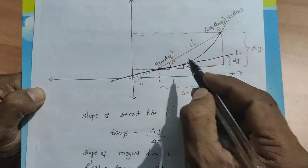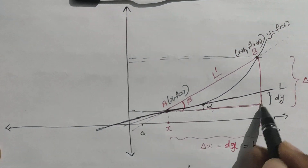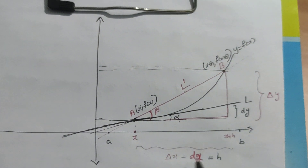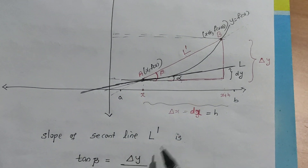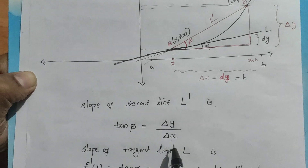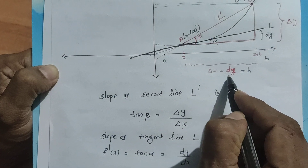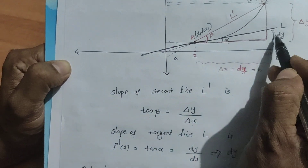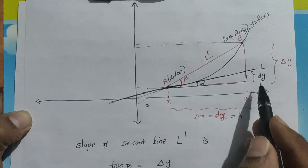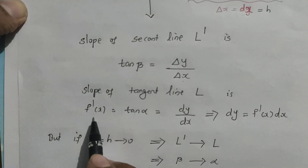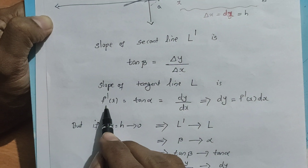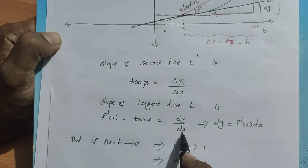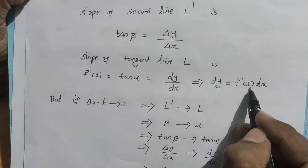The slope of the secant line L dash is given by delta Y over delta X, where delta Y is the vertical change and delta X equals h. The slope of the tangent line L, with angle alpha, is dy over dx. So F dash of x equals tan alpha equals dy by dx, which implies dy equals F dash of x into dx.